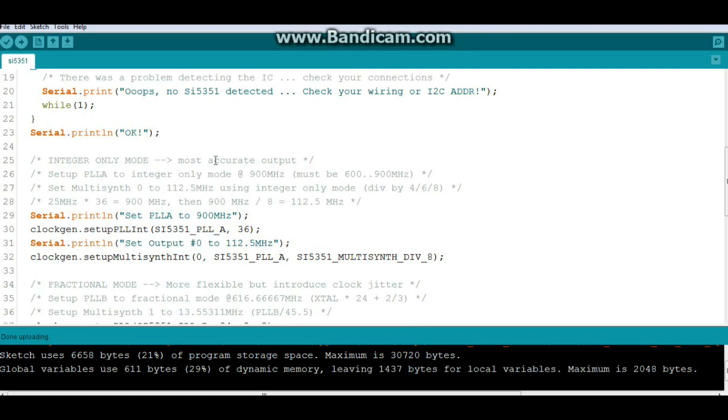All right okay so we're going to set our ClockGen0 to integer only mode. We're going to set up our phase locked loop A to integer only mode at 900 megahertz and you can see it has to be between 600 and 900 megahertz so to get your output frequency in this case 112.5 megahertz we have to use the divide by 4, 6, or 8. So we have our 25 megahertz crystal times 36 which equals our 900 megahertz and then we divide our 900 megahertz by 8 and that gives us our output of 112.5.